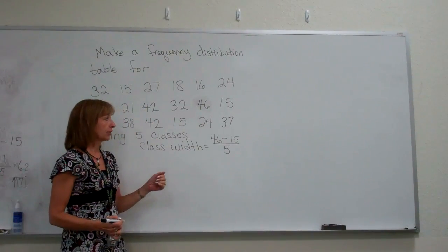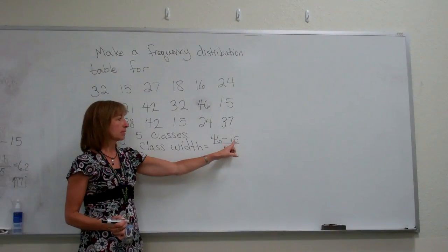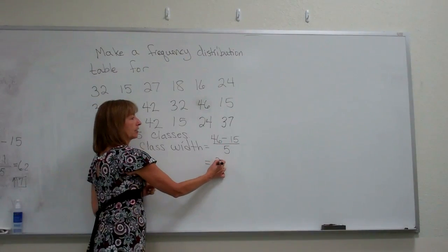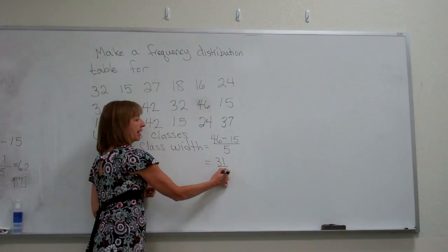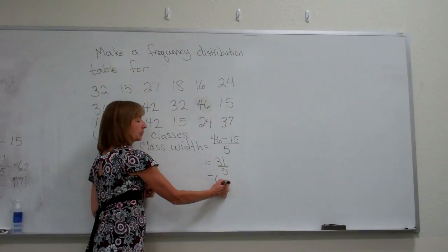Now when we carry out this calculation, 46 subtract 15 is 31 divided by 5, and we get 6.2.